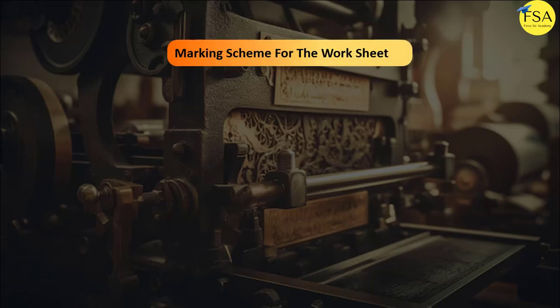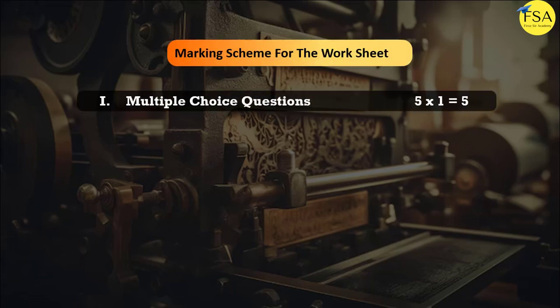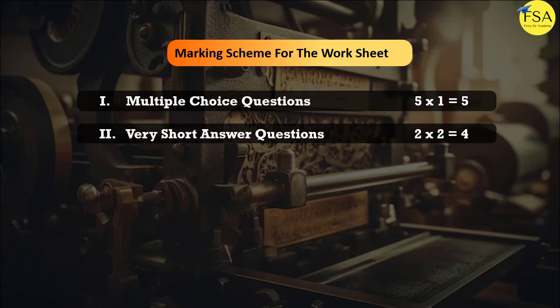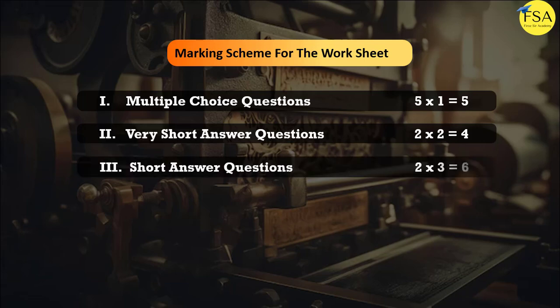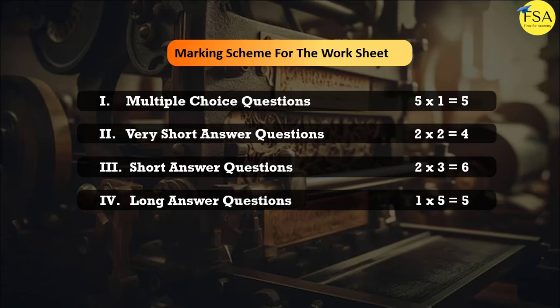Let's see the marking scheme for the worksheet. The first main is multiple choice questions — 5 questions, each carrying 1 mark. The second main is very short answer questions — 2 questions, each carrying 2 marks. The third main is short answer questions — 2 questions, each carrying 3 marks. And the fourth main is long answer questions — 1 question carrying 5 marks. Total: 20 marks.